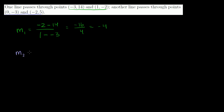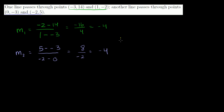For the second line, the slope is 5 minus negative 3 over negative 2 minus 0. That's the same as 5 plus 3, which is 8, over negative 2. So this is also equal to negative 4. These two lines are parallel — they have the exact same slope. I encourage you to find the equations of both lines, graph them, and verify for yourself that they are indeed parallel.